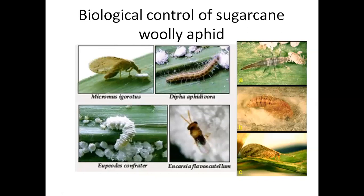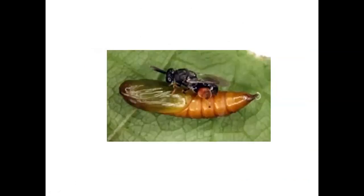For biological control of sugarcane woolly aphid, you can release Micromus igrotes — brown lacewing; a syrphid insect called Eupoios confractor; and Diapha epidivora, a lepidopteran insect. These three species are also very important from an exam point of view. A frequent exam question is: which biocontrol agent is useful to control the sugarcane woolly aphid?